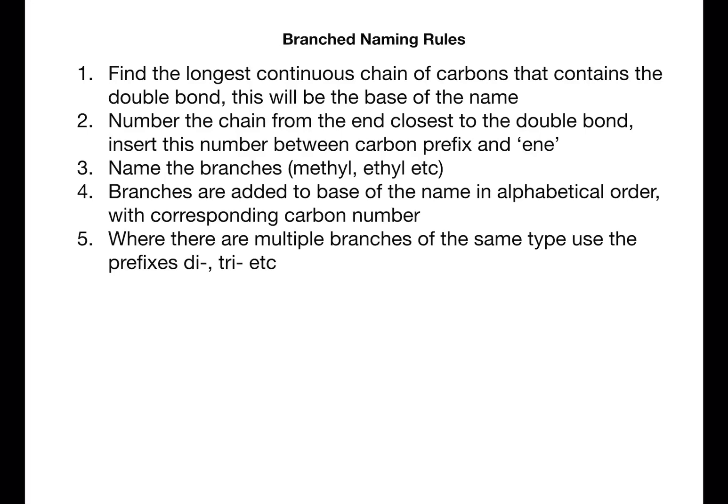You then need to number the chain from the end closest to the double bond — this could be from left to right or from right to left. You then need to insert this number between the carbon prefix, such as 'pent', and then the suffix 'ene'. You need to name the branches — methyl, ethyl, etc. These are added to the base of the name in alphabetical order with their corresponding carbon number, which comes from the original numbering that you did for the double bond.